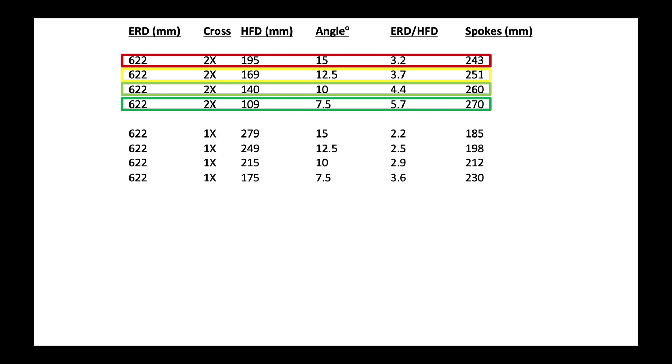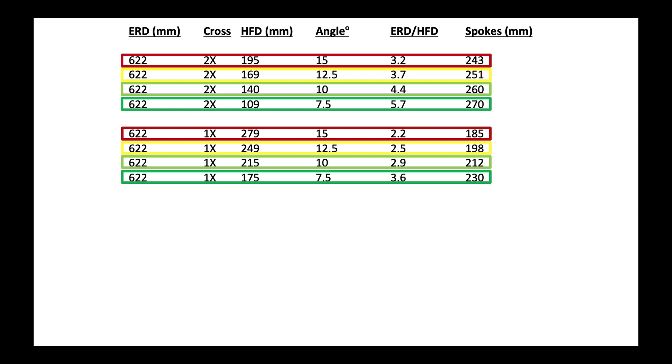Now we're going to look at the same data, except here we're going to do a one cross. We still have the same pattern of red to yellow to light green to dark green. If I look at the data here and I compare the dark green two cross to the dark green one cross, it's clear that with the one cross I can have a much larger hole flange diameter hub, 175 millimeters compared to 109, and still have a nice acceptable 7.5 degree angle.